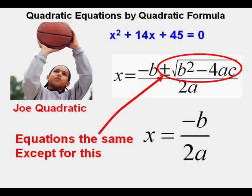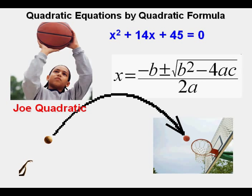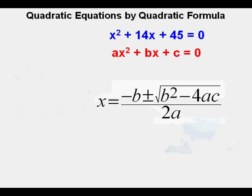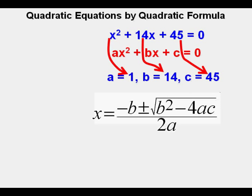The first equation Joe will solve is x squared plus 14x plus 45 equals zero. The first thing Joe does is lay out ax squared plus bx plus c equals zero from the quadratic equation. For this equation, it's already in standard form. x squared has no number in front of it, so a equals 1, b equals 14, and c equals 45.